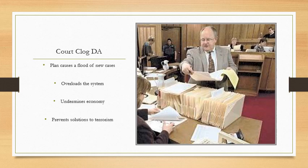Some argue court clog undermines the economy because businesses need court access, and if the court gets overloaded, the economy suffers. Others say it hurts solutions to terrorism because we need to aggressively prosecute terrorist suspects. The problem with this disadvantage is winning that it's unique — the courts are already pretty overloaded. The federal government doesn't give many resources to the federal courts, so it's difficult to win uniqueness. But you can run it as a small dis-ad, as an answer to permutations, or just have it in your arsenal.